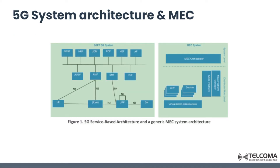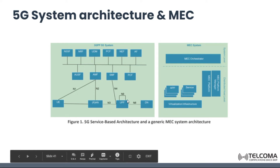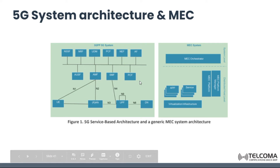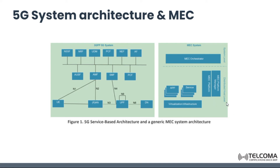This is the 5G system architecture and MEC system. We can see the 5G service based architecture. UE is connected with the RAN, and via the N3 interface with UPF, and then the data network. All the functions are arranged — authentication, access, and mobility management functions. This is the 3GPP 5G system alongside the MEC system, which has virtualization infrastructure, various applications and services.